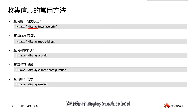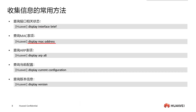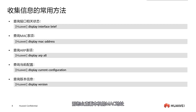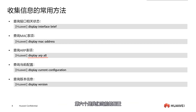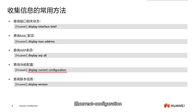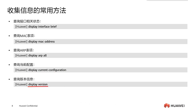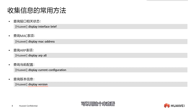Now let's look at some commonly used commands. For instance, 'display interface brief' is used to view port status, and 'display MAC address' checks the MAC address table. To check the MAC address of the local machine, you need to add 'bridge' in front, like 'bridge MAC address', to directly display the local machine's MAC address. The fifth command is ARP, and the sixth is the current configuration. Note that we have saved configuration and current configuration — the current configuration is what hasn't been saved yet. The seventh is 'display version', used to check our software version and specific device model.